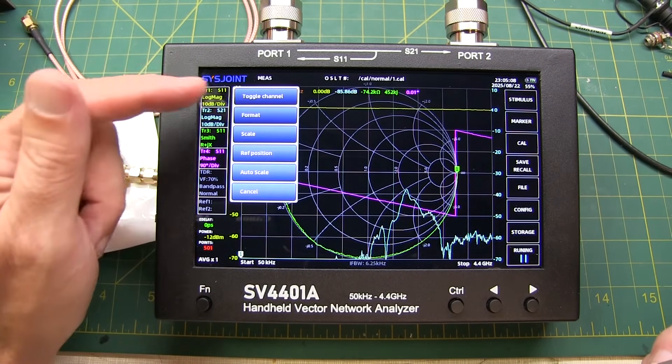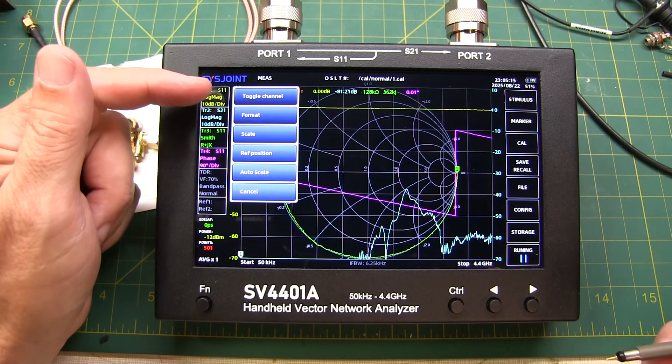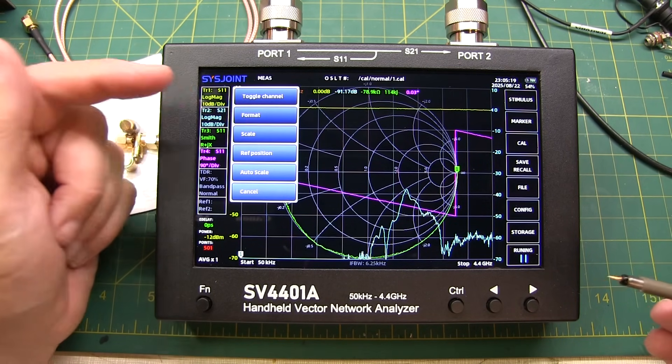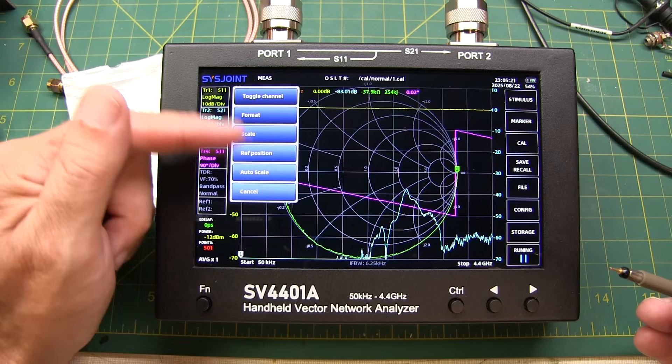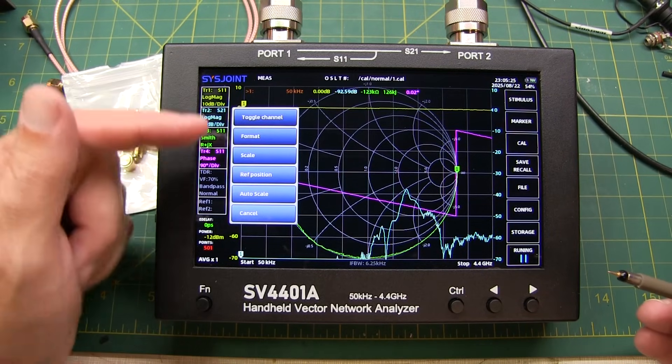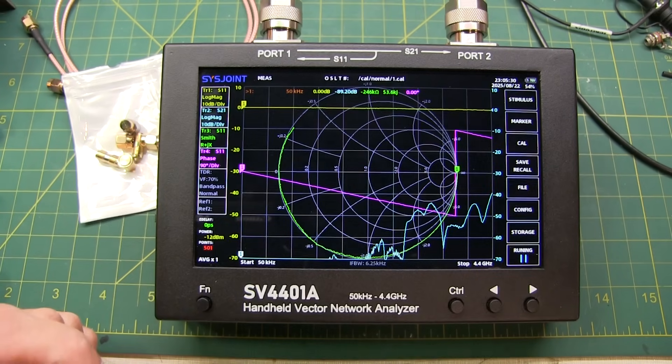Touching and holding brings up the menu for that to switch the port that the trace is connected to, change the format, say from log magnitude to SWR, change the scale, etc. So it's really simple to go and bring up the settings for each of the traces by simply touching and holding on that particular badge.